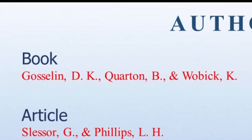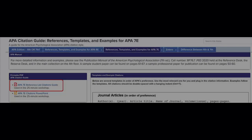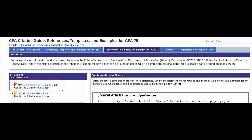Looking at the last example, this is the model for up to 20 names in the citation. Each name follows the same model, with a comma space between each and with the comma ampersand preceding the last name. If your object has more than 20 names, only 20 will be visible. There is an example of that format in the handout that accompanies this video.